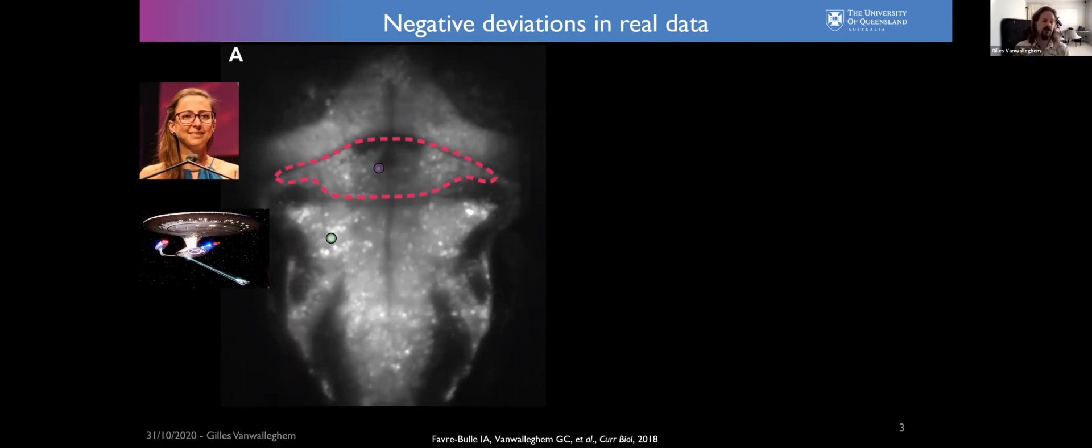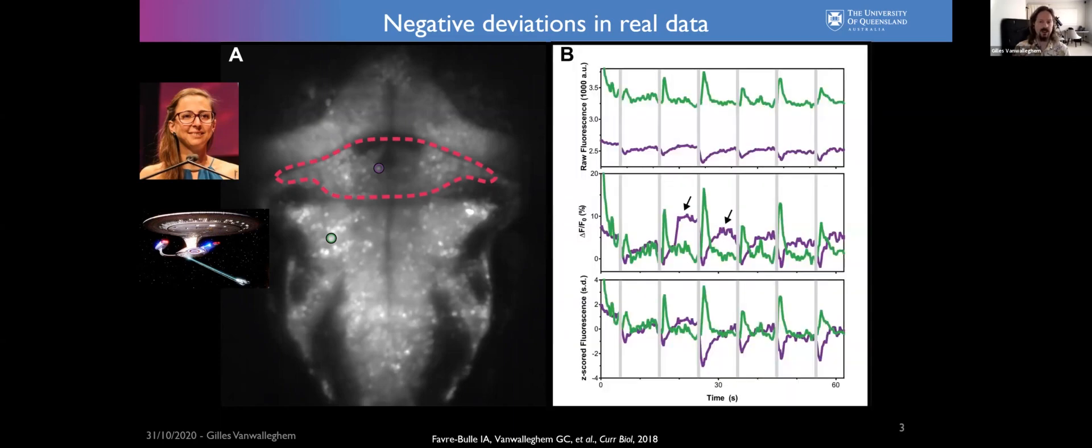In a previous data set that we published, spearheaded by a ETF that you can see here in the top left corner, she's basically invented tractor beams for zebrafish. She can move the otoliths, small stones in the ear of the fish, using optical tweezers to simulate vestibular stimulation, movement and acceleration. In that data set, that's the first time that while we were doing the analysis, what we identified were basically positive and negative responses.